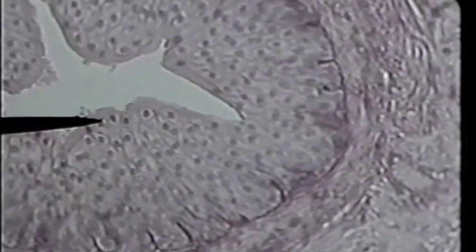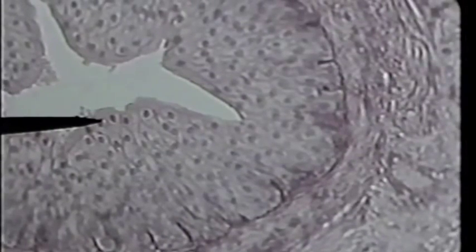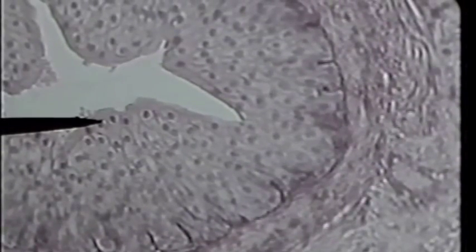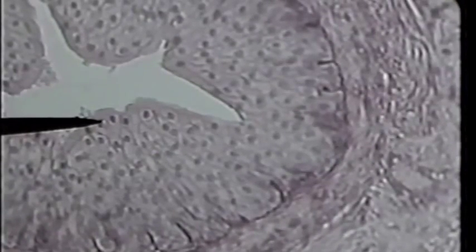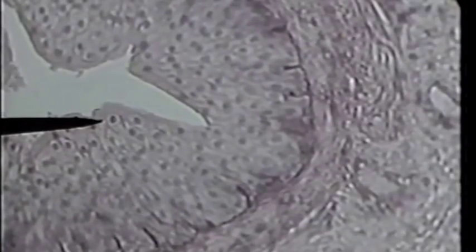It's called transitional because over the course of the day or time, the shape of the cell actually changes. When the ureter does not have a urine stream passing through it, the domes are present. When urine is coursing through it, the lumen enlarges and these cells on the superficial layer of the transitional epithelium actually stretch out and become flatter.